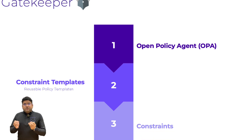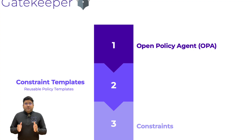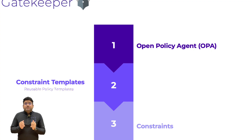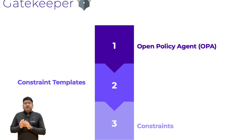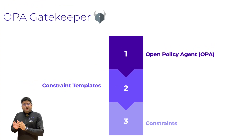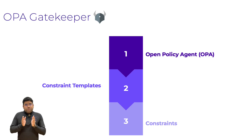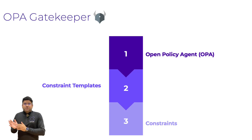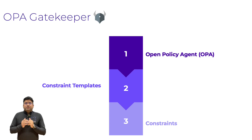Second, constraint templates. These are like blueprints that define what your security rules look like — think of them as reusable policy templates. And third, constraints. These are the actual enforceable rules that use those templates to secure specific resources in your cluster.